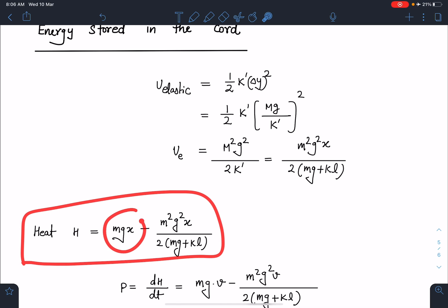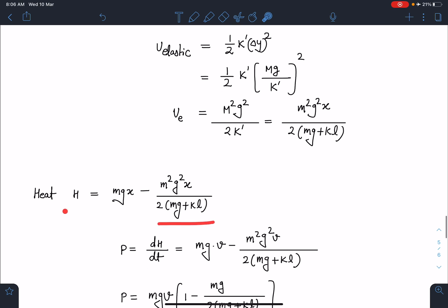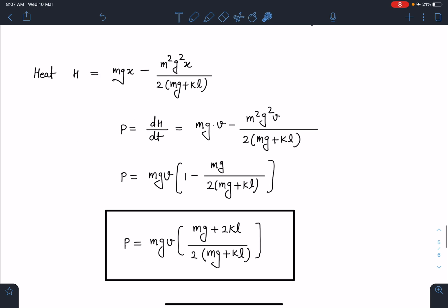If I differentiate this, I'll get the power dissipated or rate of heat generation. dH/dt with dx/dt substituted as v gives: mgv minus m squared g squared v by 2 times (mg plus kl). When I simplify this, it becomes the answer.